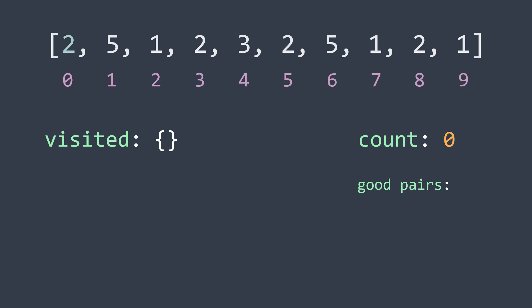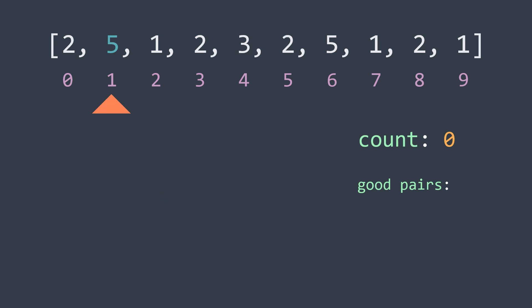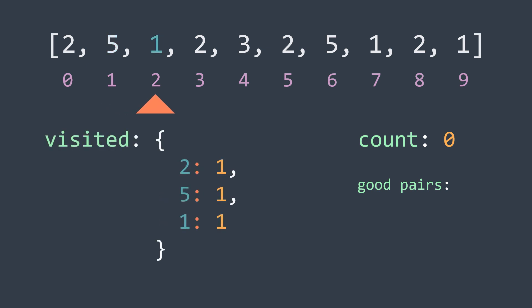The first element is 2 — we haven't seen a 2 before, so we add it to the hash map with count 1 and continue. The second element is 5 — same thing, not seen before, put it in the hash map and continue. Third element is 1 — same. Now we have the value 2 again, and from the hash map we know we've seen it once before, so we add 1 to our good pairs counter and increment the count of 2 in the hash map, because now we've seen it twice.